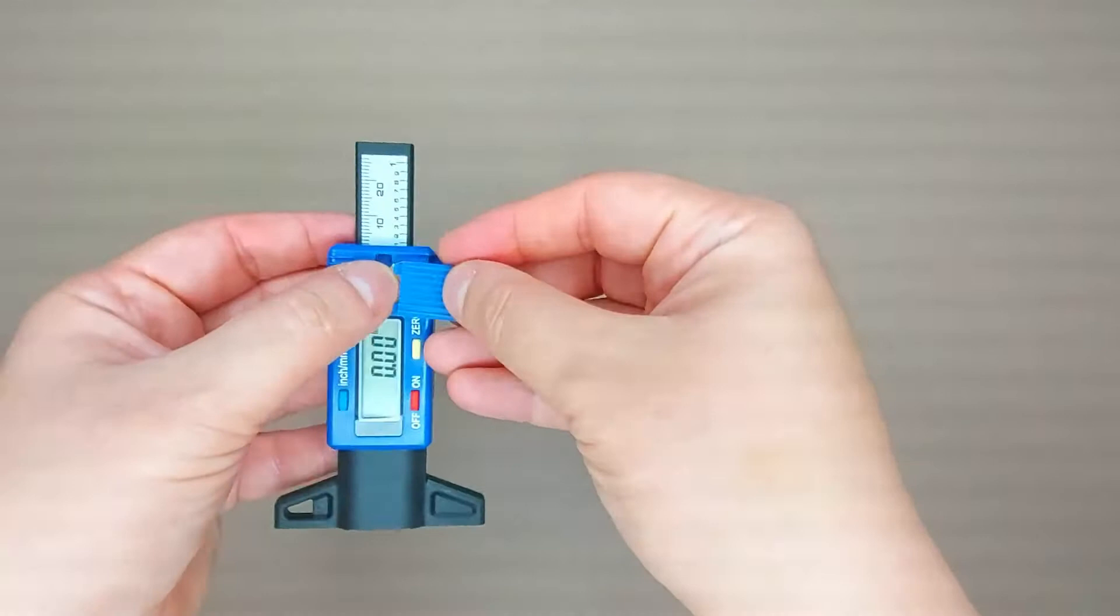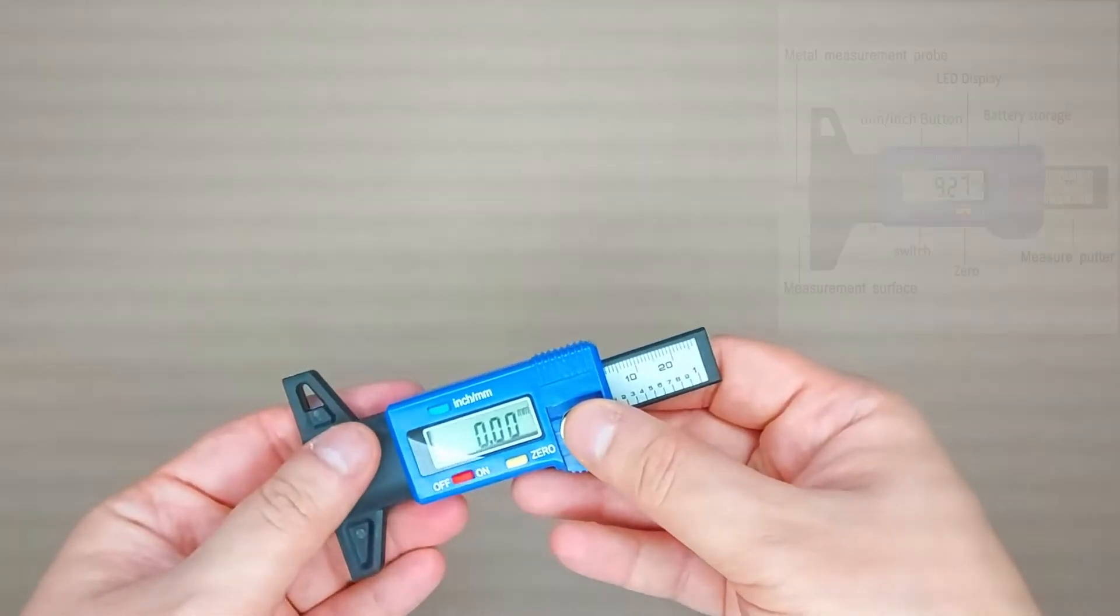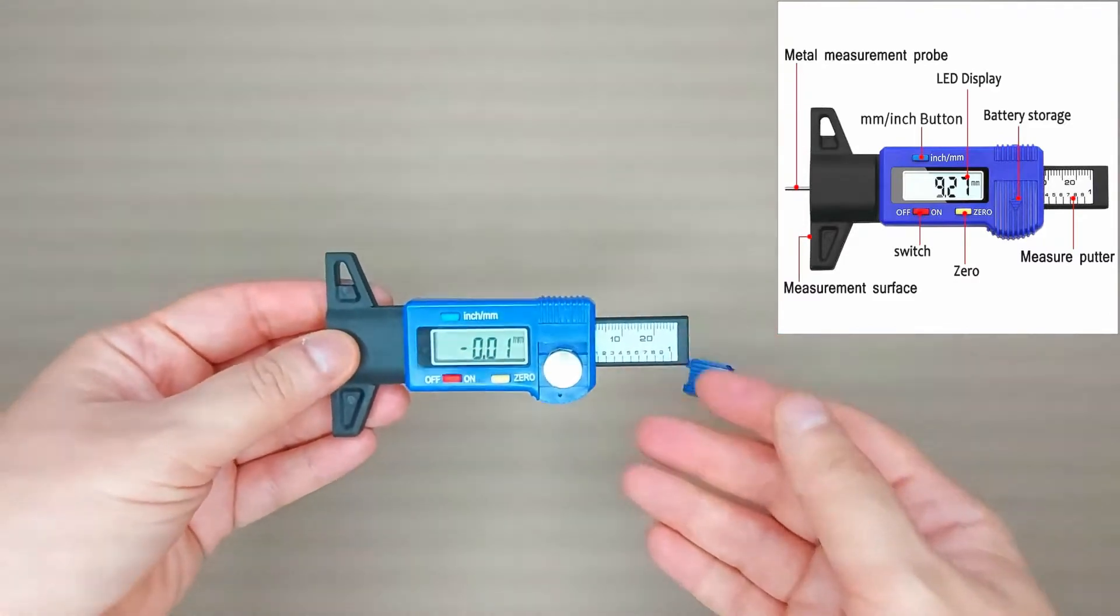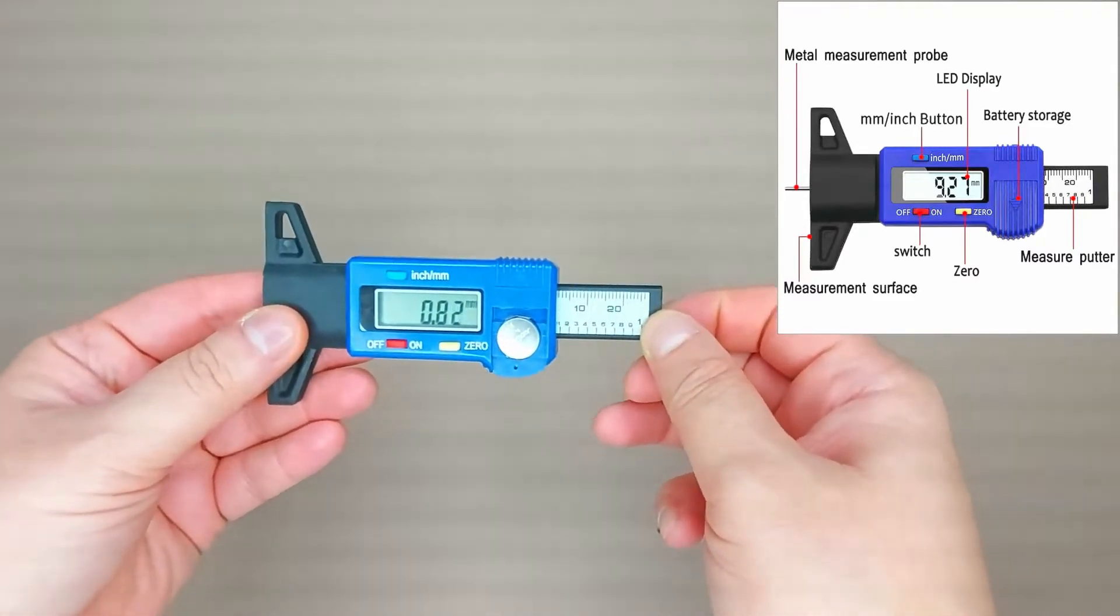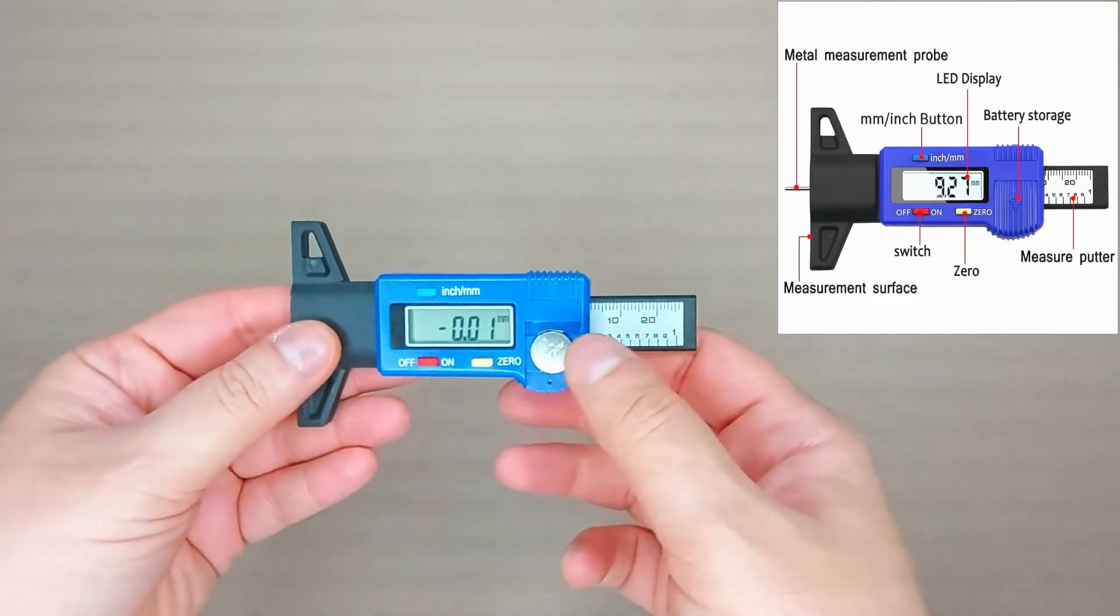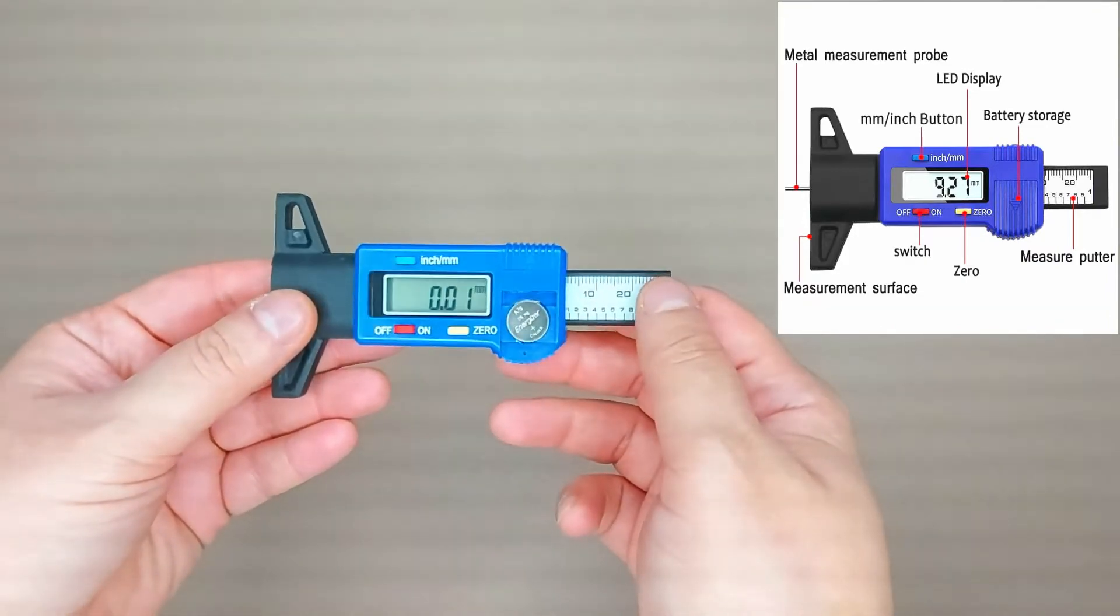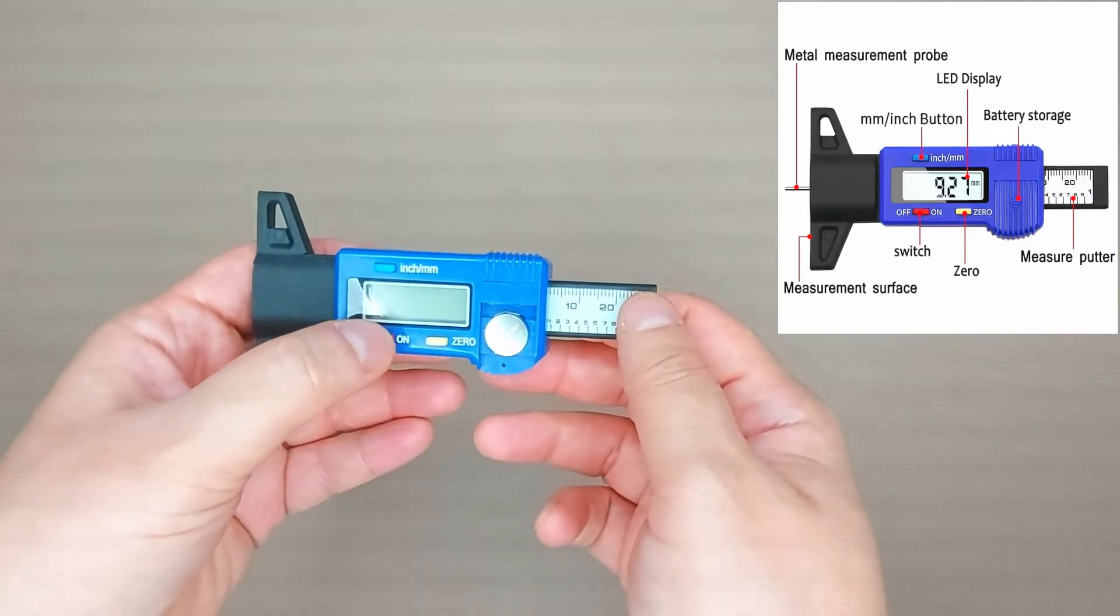This is the measuring probe which will give you a visual indication of the depth. This is the battery storage. This is to zero out the display. This is to turn it off and on.